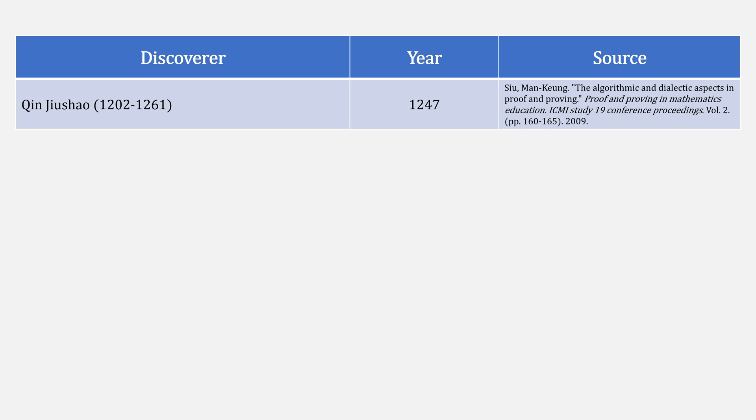Around this same time in China, Qin Ji Shao published a treatise in 1247 that had a way similar to Horner's that could solve roots up to 10th order.